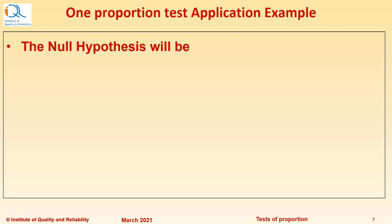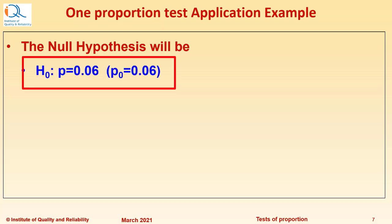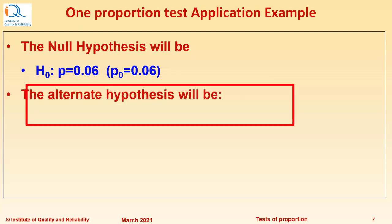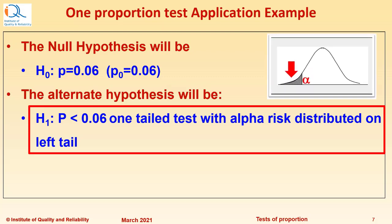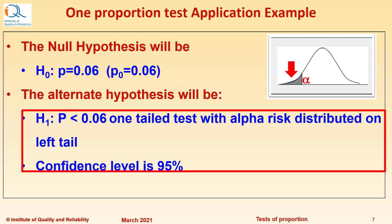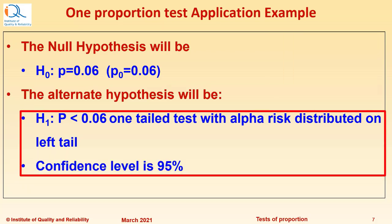The null hypothesis for this example will be H0: P equals 0.06 as historical proportion defective is given as 6% or 0.06 proportion. The alternate hypothesis will be H1: P less than 0.06 as we want to check for reduction in proportion defective. This would be a one tail test with alpha risk distributed on left tail. Confidence level given is 95%.